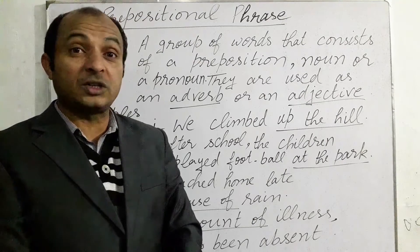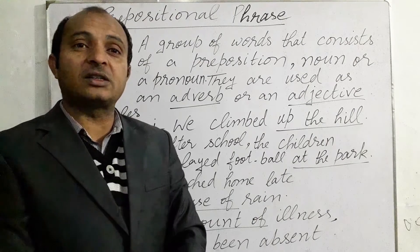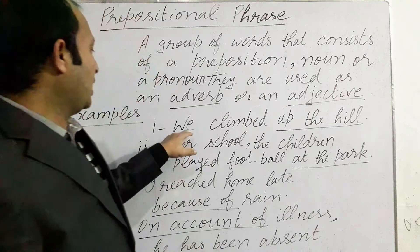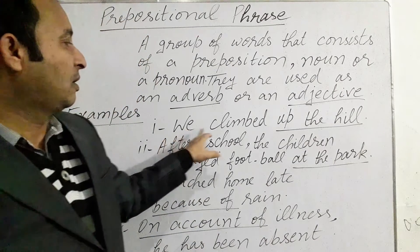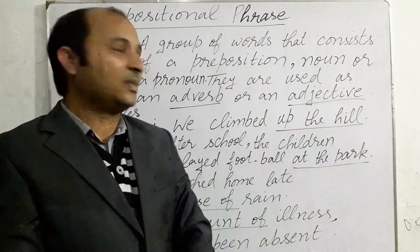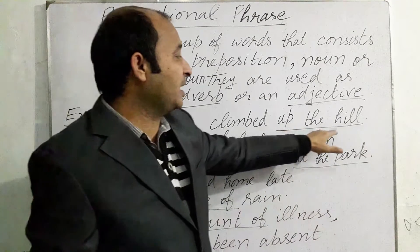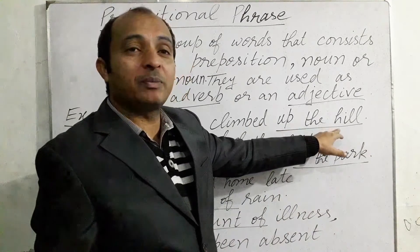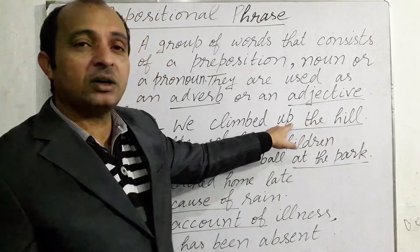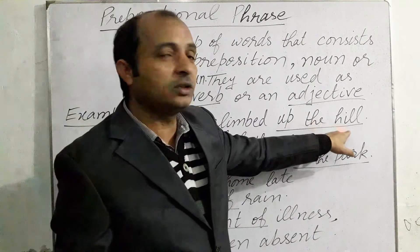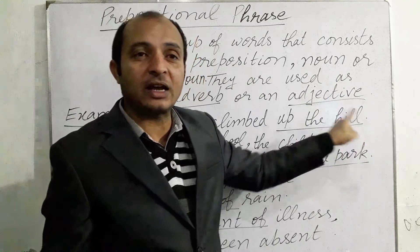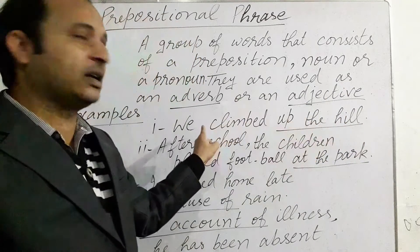The first example is: 'We climb up the hill.' The underlined phrase 'up the hill' is the prepositional phrase. It consists of a preposition and a noun — 'the hill' — so it's a prepositional phrase as a whole and a part of the sentence.